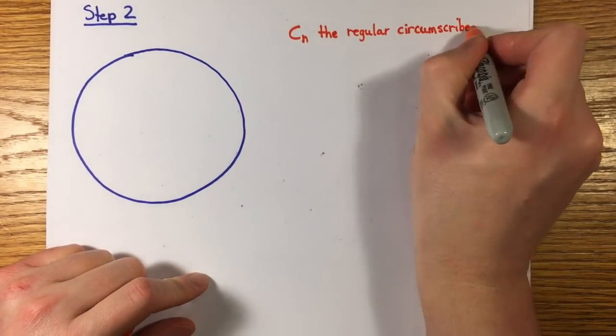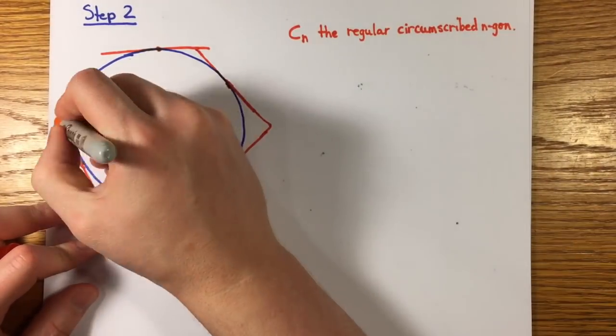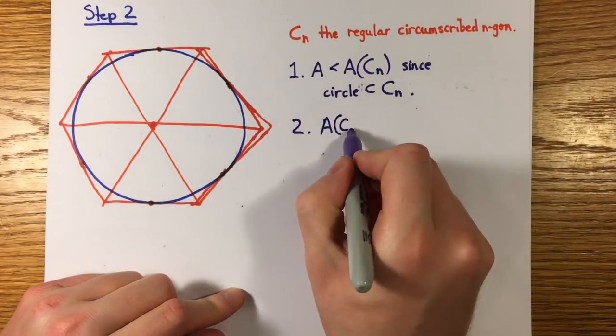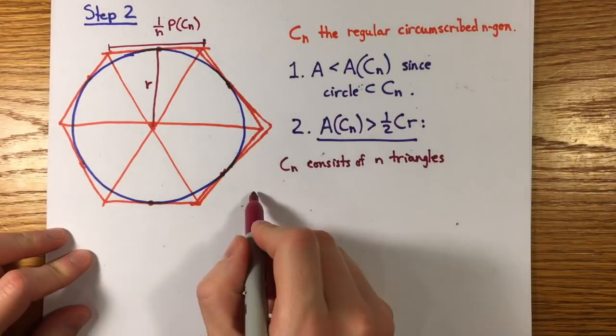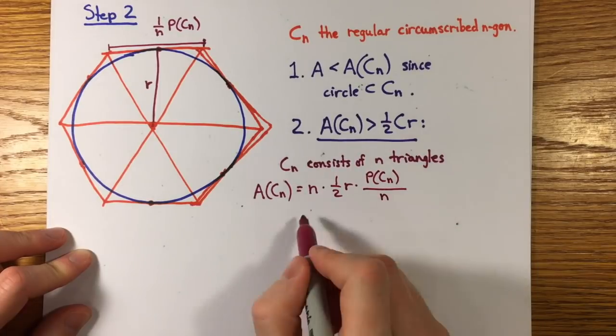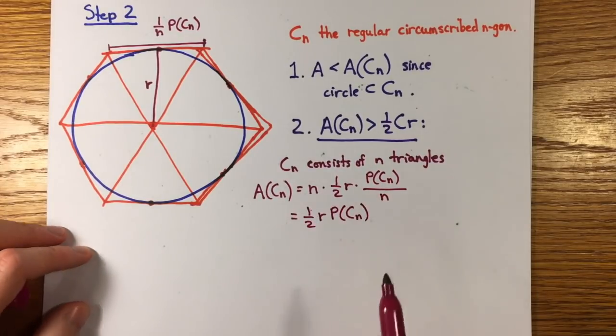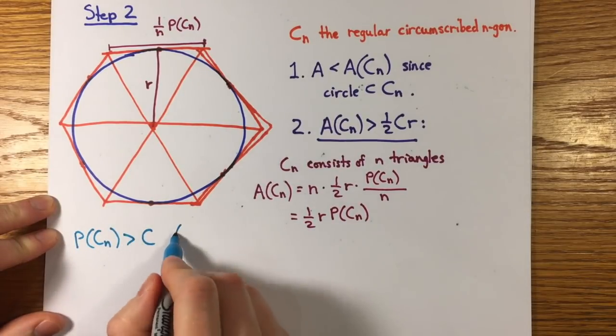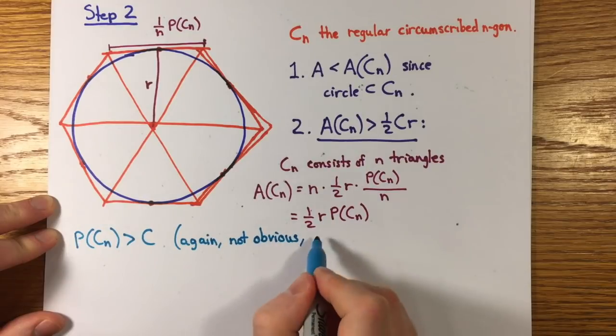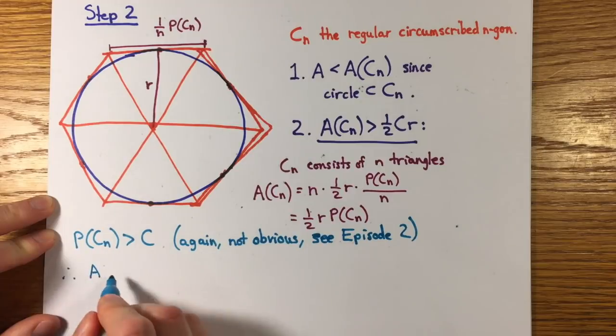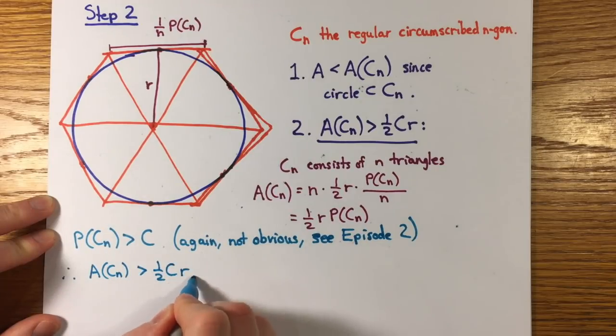And so similarly, in step two, we compare the areas of circumscribed regular polygons c n to the circle. Their areas are larger than A, and they're also greater than one half cr. Now the apothem is equal to the radius, and the area of c n is one half r p of c n. Once again, the perimeter of c n is greater than the circumference of the circle, but that's not easy to prove. So once again, you should definitely check out episode two for a proof. With that, A of c n is greater than one half cr.